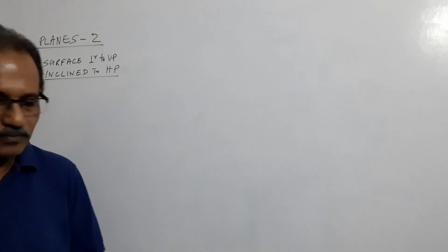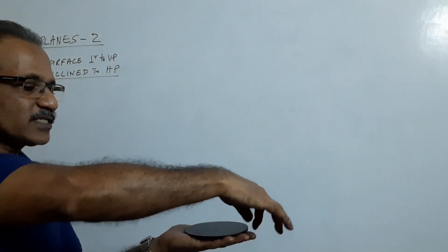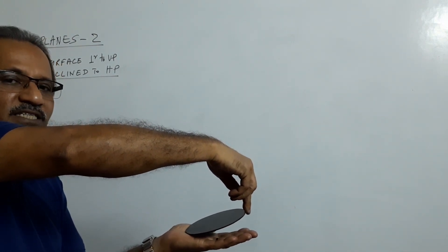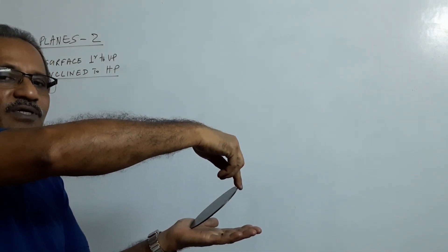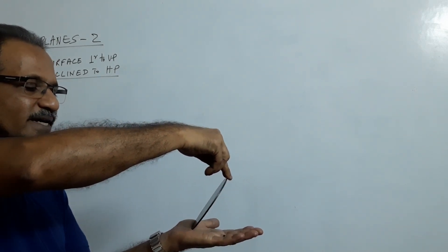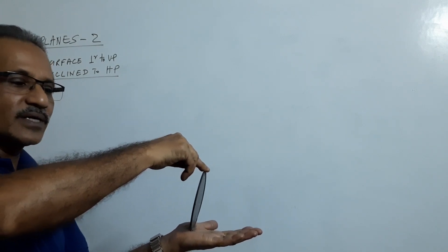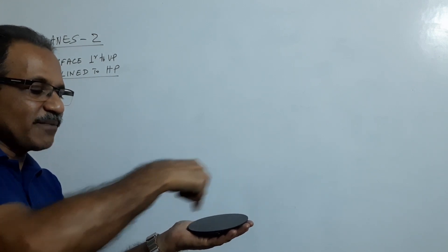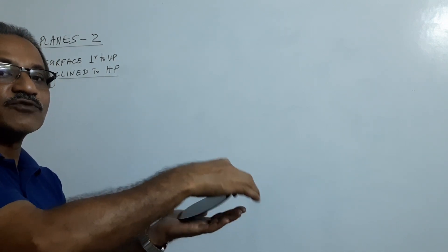Listen. The circular lamina is resting on HP — the plan is a circle and the elevation is a line on XY. If you lift this, the plan will change from circular to ellipse. At some point, the plan will be an ellipse with minor axis 30 and major axis remaining 50 always. If you lift it further, the plan will eventually become a straight line. Somewhere on this movement the plan becomes an ellipse of minor axis 30 — this diameter is reducing as the minor axis. You don't know that angle; you are asked to find it out.